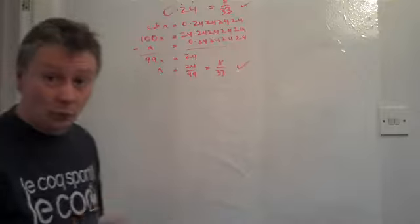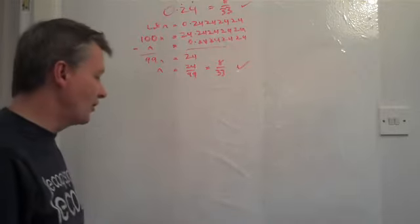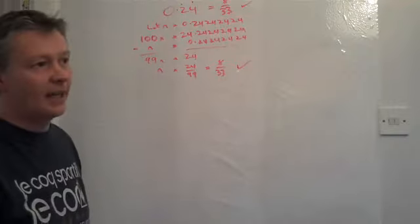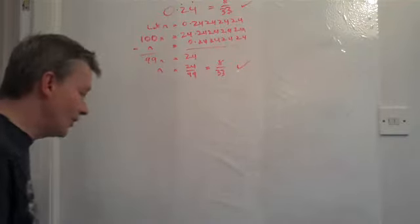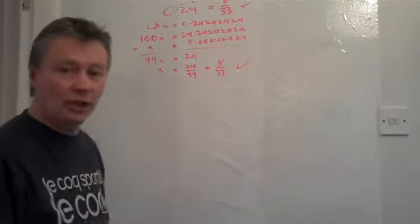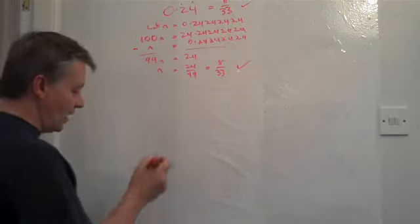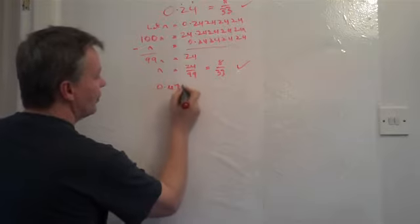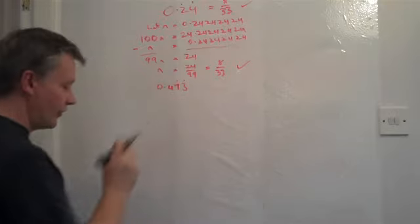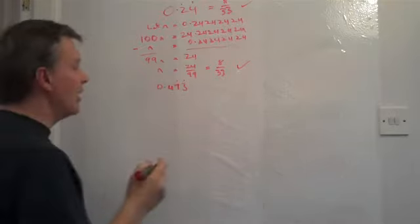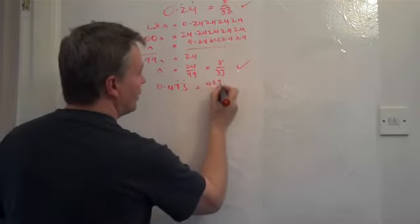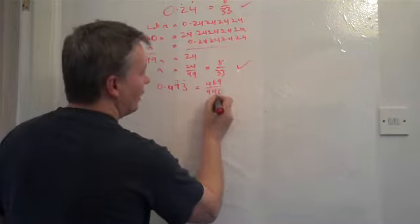OK. I've got one more. And this is also a grade A question. And it's also worth probably 3, 4 marks, something like that. Slightly trickier, but it's using exactly the same principles. And the question is, prove that 0.473 with the 73 recurring is the same as the fraction 469 over 990.